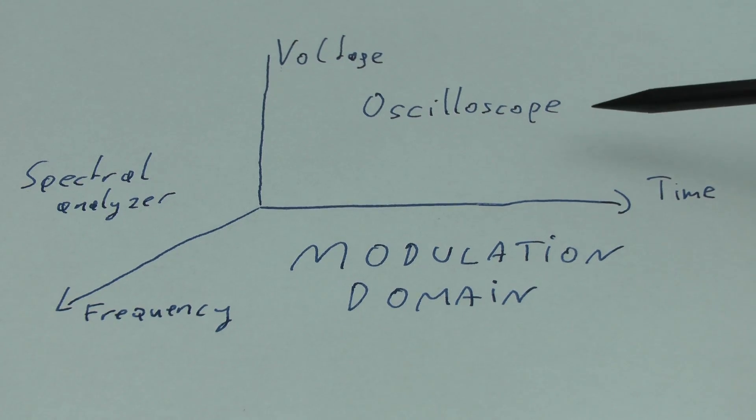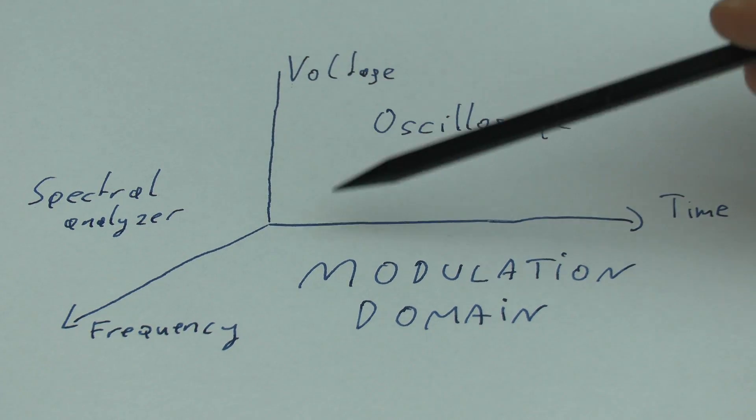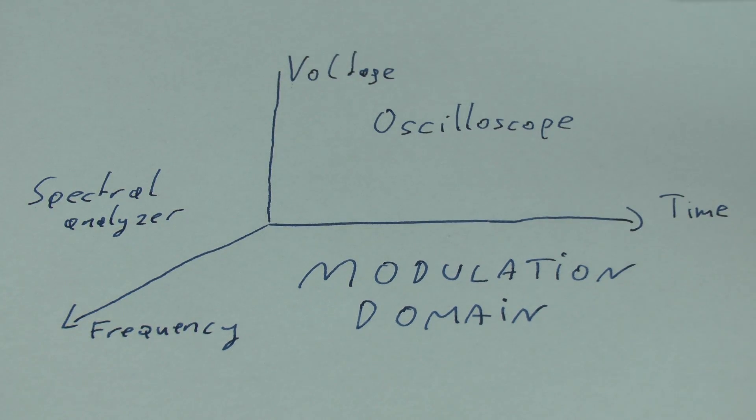Let us start out by looking at an instrument you all know and love, namely the oscilloscope. An oscilloscope shows us the voltage over the time. So essentially, as the time passes by, we see the change in the voltage.